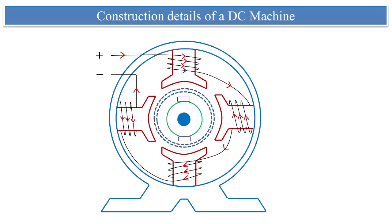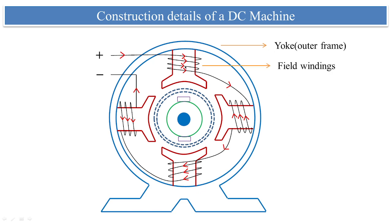Let us go into the detail of the construction of a DC machine. Here we are seeing a four-pole DC machine that can work as a DC generator as well as a DC motor. The primary part is what we call the yoke — this outer frame is known as the yoke. You can see positive and negative signs of supply given to the poles of the machine, and the poles consist of windings surrounding them, which are called field windings.